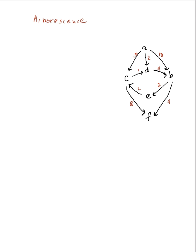An arborescence is a spanning tree on a directed graph. So when we talk about minimum spanning trees, the algorithms for finding minimum spanning tree are on an undirected graph. An arborescence is a spanning tree on a directed graph.